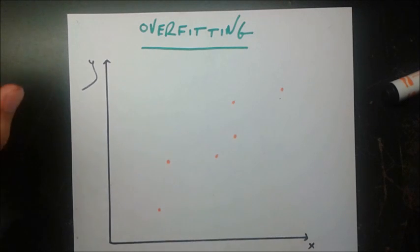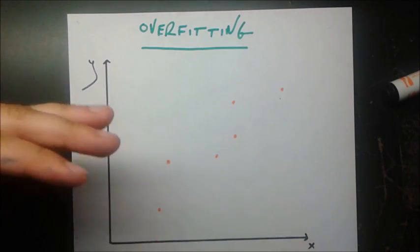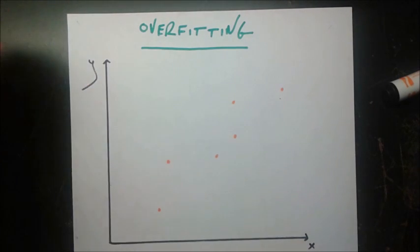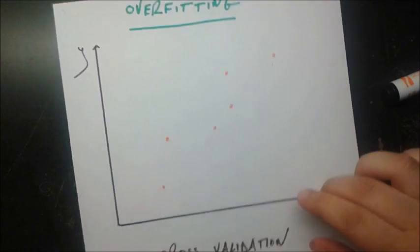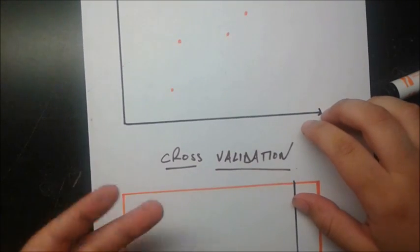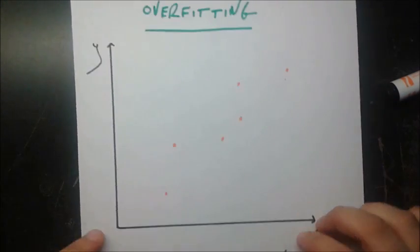In this video we'll be going over a statistical phenomenon called overfitting and how we can avoid this big problem by something called cross-validation.